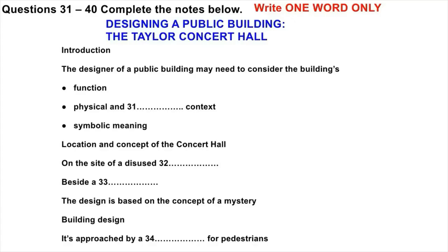We've been discussing the factors the architect has to consider when designing domestic buildings. I'm going to move on now to consider the design of public buildings, and I'll illustrate this by referring to the new Taylor concert hall that's recently been completed here in the city. As with a domestic building, when designing a public building, an architect needs to consider the function of the building — for example, is it to be used primarily for entertainment, education, or administration?